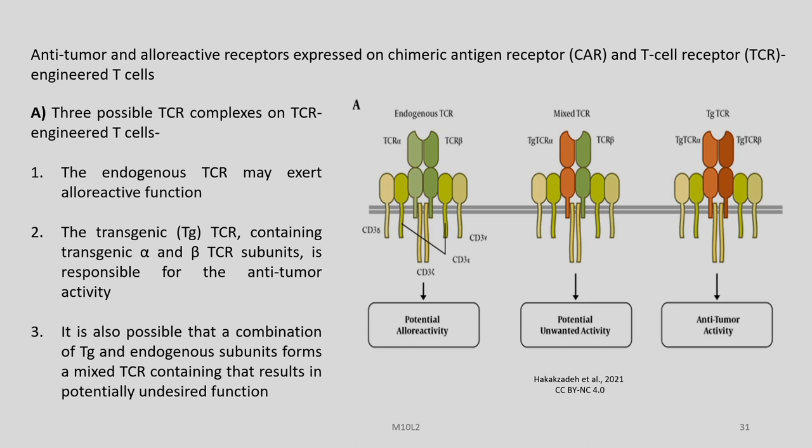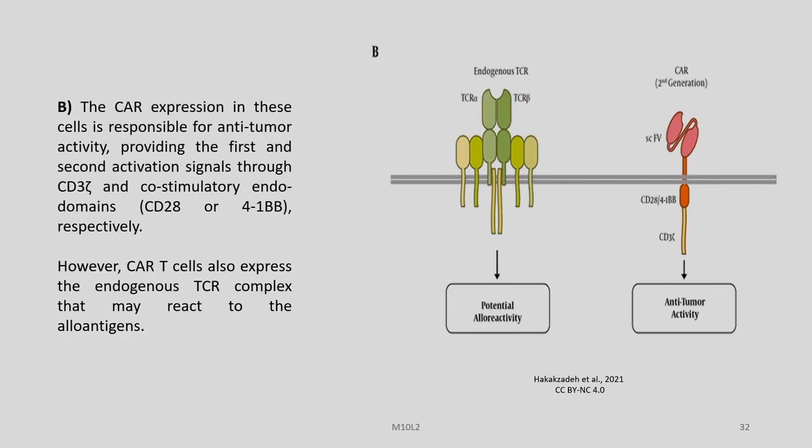We can see three possible TCR complexes on TCR-engineered T-cells. Number one, the endogenous TCR may exert allo-reactive function. Number two, the transgenic TCR containing transgenic alpha and beta TCR subunits is responsible for antitumor activity. Number three, it is also possible that the combination of transgenic and endogenous subunits form a mixed TCR that results in potentially undesired function. Or, option B, the CAR expression in these cells is responsible for antitumor activity, providing the first and second activation signals through CD3 and co-stimulatory endodomains CD28 or 41BB respectively.